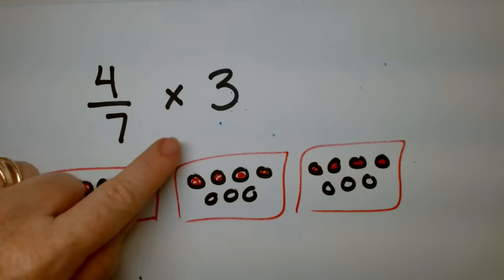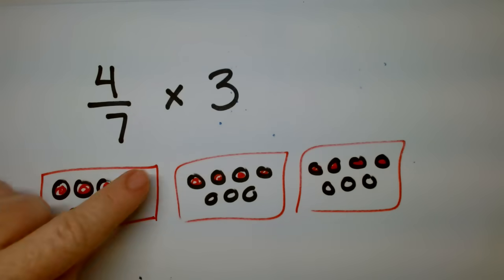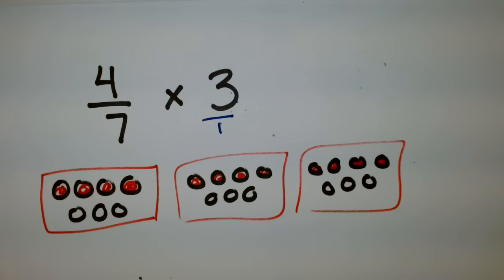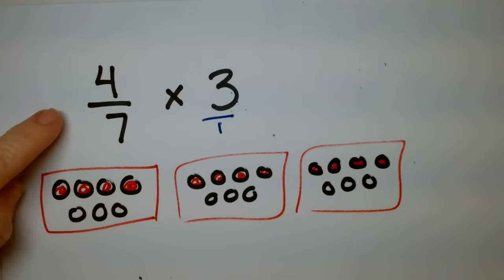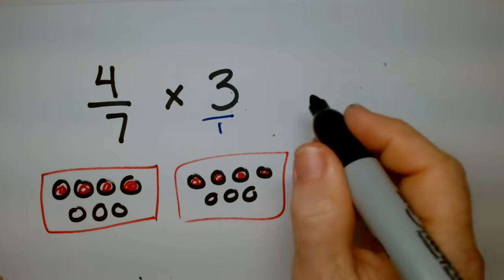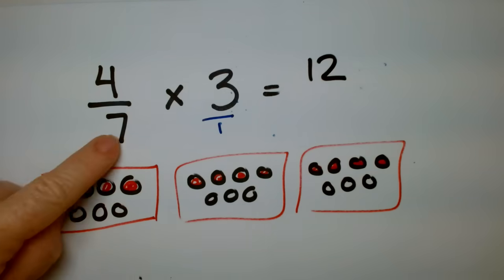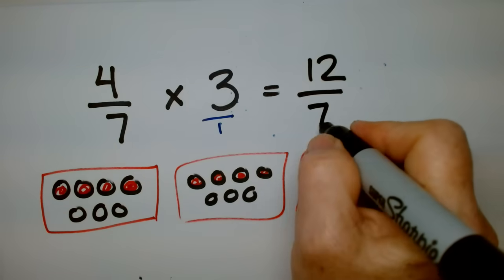Can you multiply these together? Do you remember how there's always a little secret hidden 1 here if you need it? Yeah, always, because this is a whole number. So 4 times 3 is 12. 7 times 1 is 7.